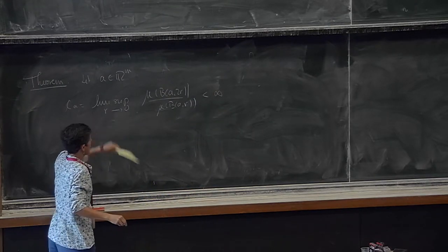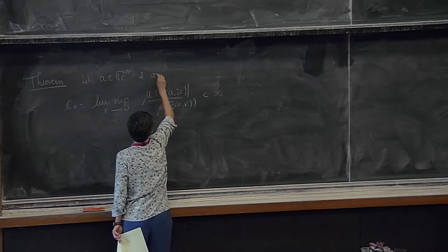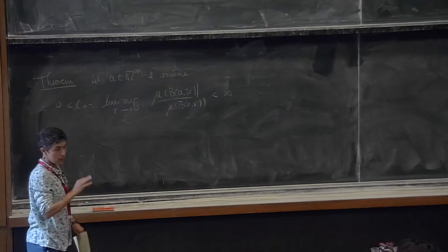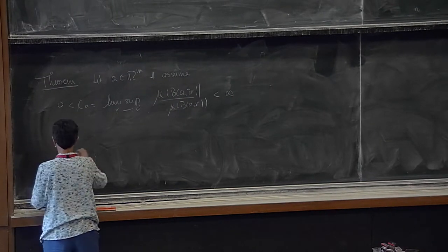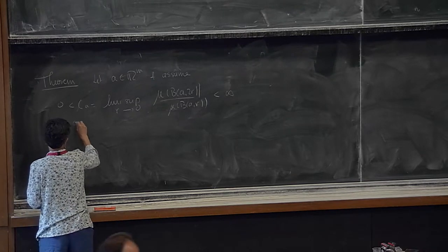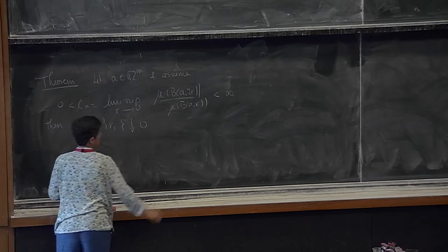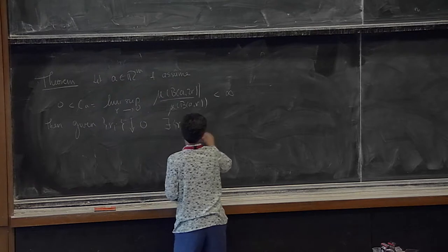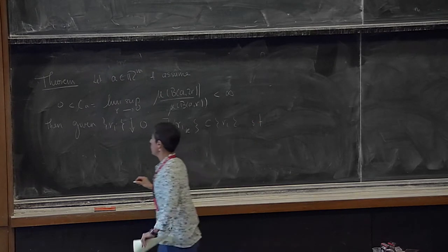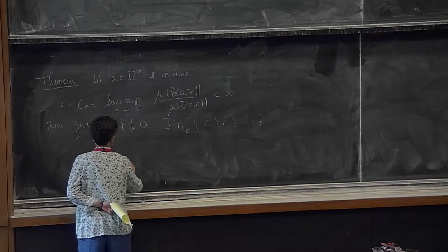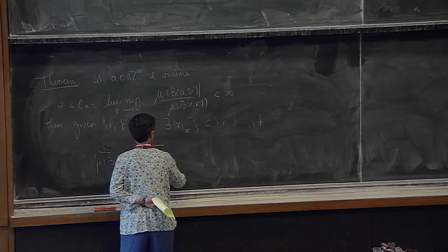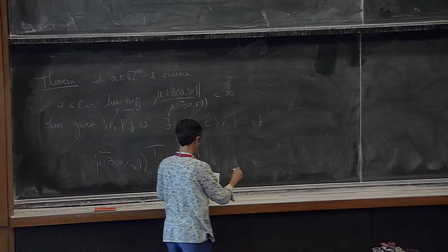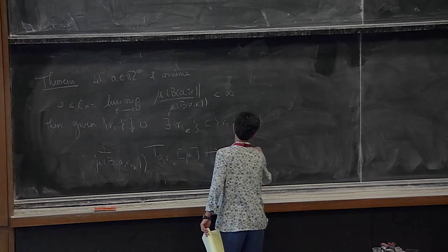Let a be in R^m, and assume that this number C_sub_a is bigger than zero—so I'm not assuming zero over zero. Then, given a sequence r_i going to zero, there exists a subsequence such that if I look at mu of B(a, r_{i_k}) over T_{r_{i_k}} of mu, this converges weakly to a non-zero Radon measure. So I am choosing my c_sub_i's, and nu is a tangent measure.